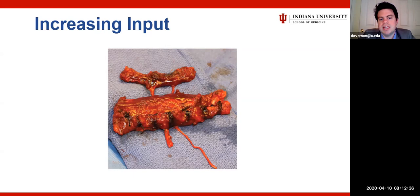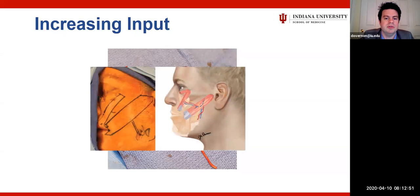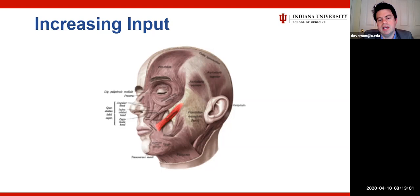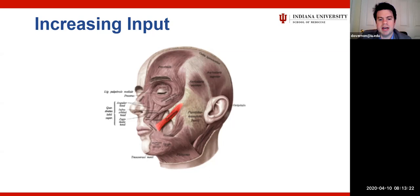The gold standard for increasing input — and the most invasive option — is the gracilis free flap. Most of us are not doing this for incomplete facial paralysis, but there may be a subset of patients for whom it's appropriate. The multi-vector flap is probably not needed for most incomplete paralysis patients, but a single-vector gracilis free flap placed more in anatomic position, in line with the zygomaticus, could be useful for patients who need a little more dental display or vertical elevation rather than commissure movement.